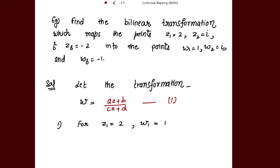First, putting z1=2 in place of z and w1=1 in place of w. So w becomes 1 = (2a+b)/(2c+d). We get an equation in terms of a, b, c, d. Taking (2c+d) to the other side, we get the equation: 2a + b - 2c - d = 0. Let's name this equation 2.